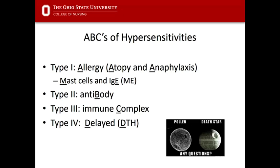I like to remember your ABCs of hypersensitivity. Type one is allergies — also atopic diseases and anaphylaxis — these are due to mast cells and IgE. Type two is antibody driven. Type three is C, which stands for complex — the immune complex. Type four is delayed hypersensitivity. The reason it's delayed is because you have to wake up antigen-specific T cells, and that takes a while.